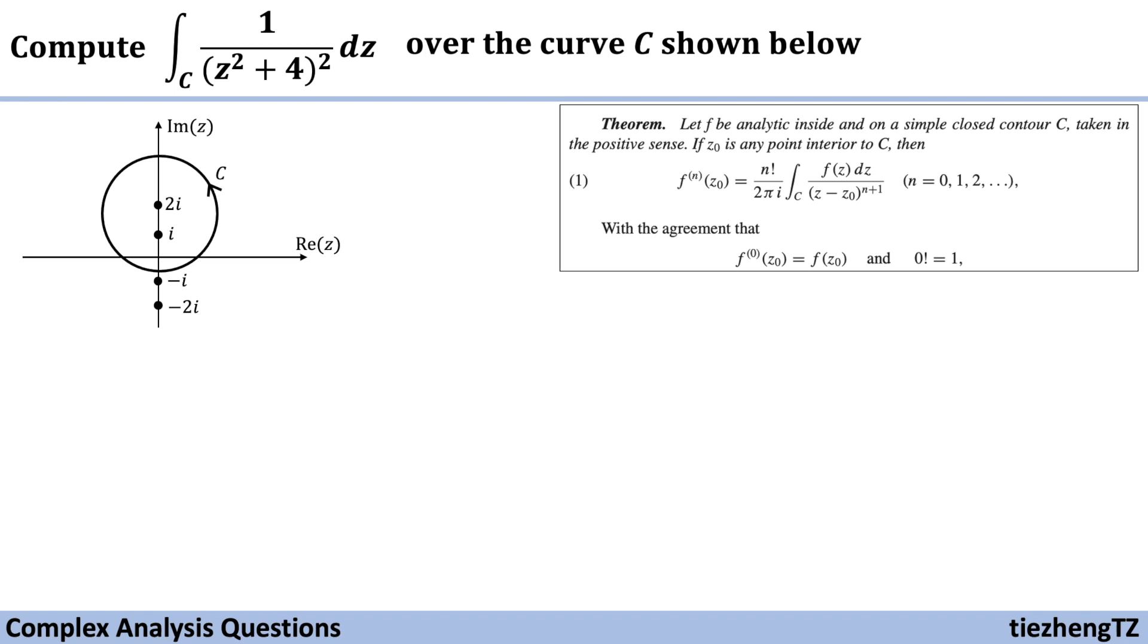So in the previous video, we know the denominator part z squared plus 4 can be rewritten as (z + 2i) times (z - 2i). And from the given curve, we know the point should be (0, 2i). It is inside the contour C. And correspondingly, we know the f(z) function should be 1 over (z + 2i) squared. And this f(z) function is analytic inside and on the contour C.